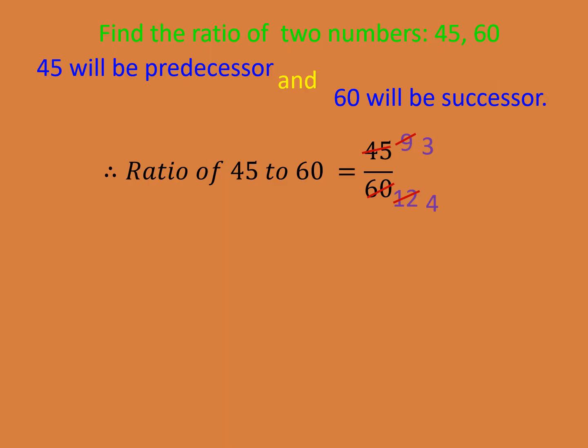The common multiple is 15, which is 5 times 3. So the ratio will be 3 upon 4. Because 15 is common in 45 and 60, we reduced them and got the common multiple as 15. The ratio we can write down in the form of 3 upon 4, or 3 is to 4.